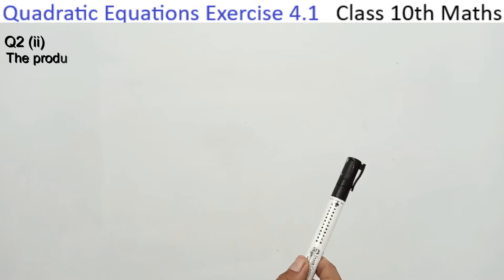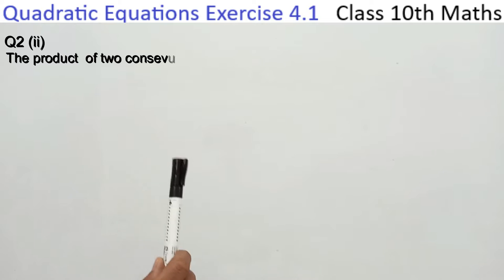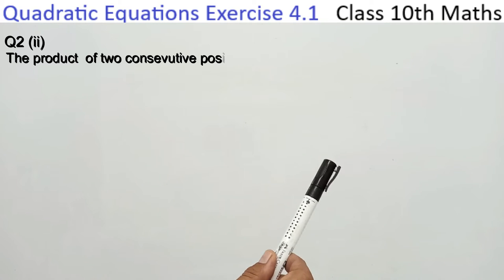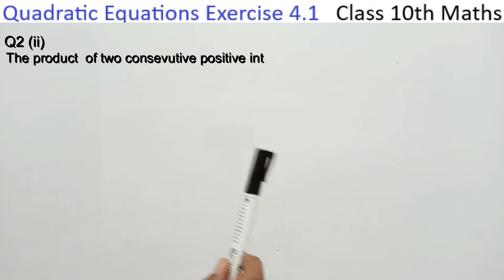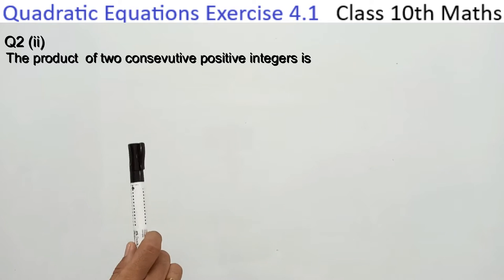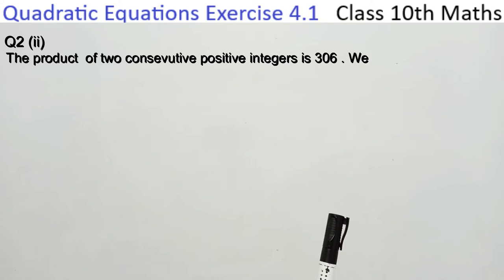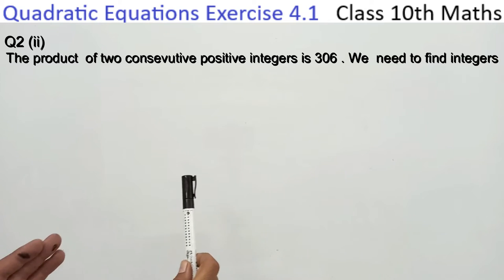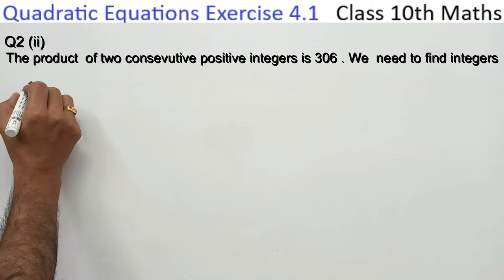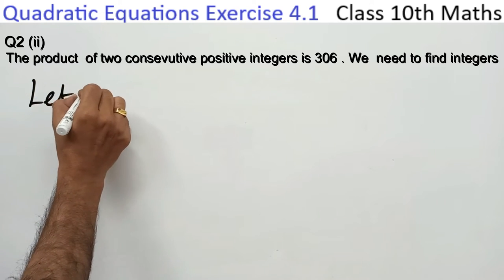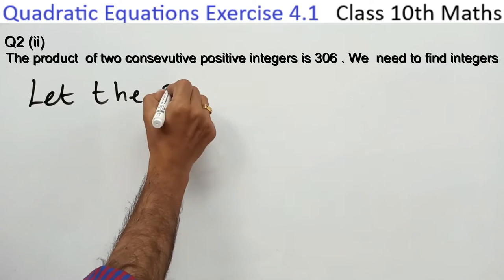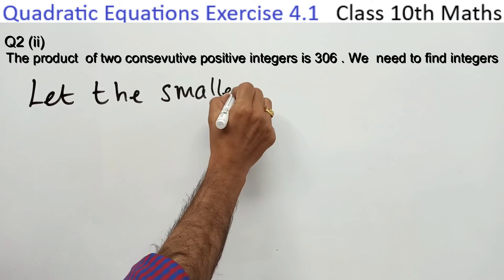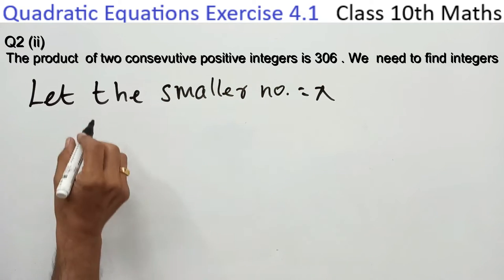Class 10 Exercise 4.1 quadratic equation, question 2. The product of two consecutive positive integers is 306. We need to find the positive integers. This means two consecutive numbers multiply to give 306, so we need to form a quadratic equation.